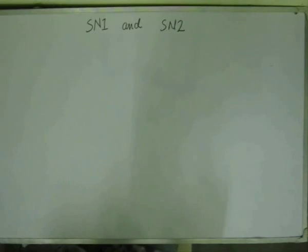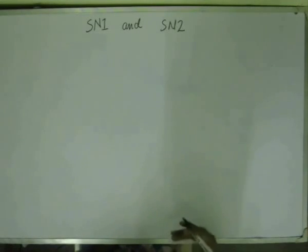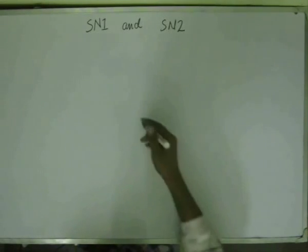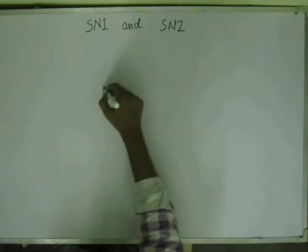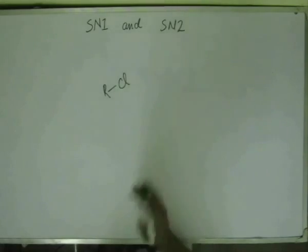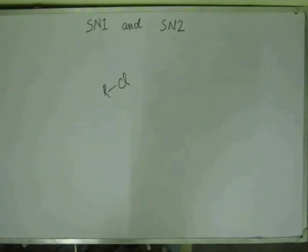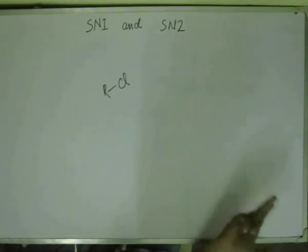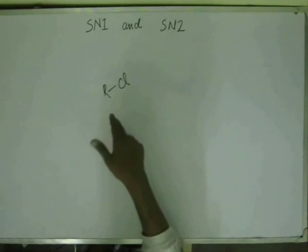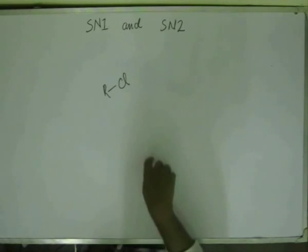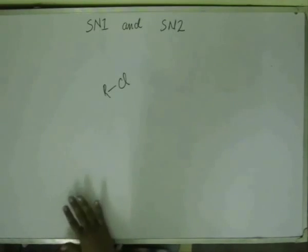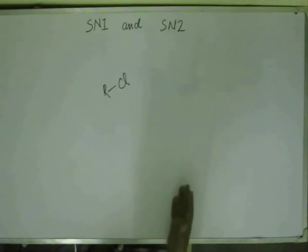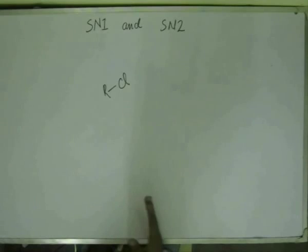Let's recapitulate how SN1 works. We have already studied the SN1 reaction. In the first step, the leaving group moves out. In the second step, the nucleophile comes in and attacks. There is an intermediate step of rearrangement if there is a possibility of rearrangement to make the carbocation hence formed more stable.